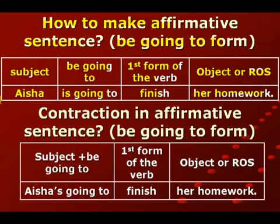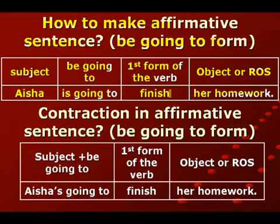الجملة اللي عندنا: Aysha is going to finish her homework - يعني عايشة بتخلص واجباتها. في هاي الجملة، عايشة هاي subject، وis going to هاي شكل الـ be. بعد going to دايما نحط أول حالة الفعل، ما نستخدم حالة ثانية أو ثالثة أو رابعة أو خامسة. وher homework هاي مفعول وبقية الجملة.